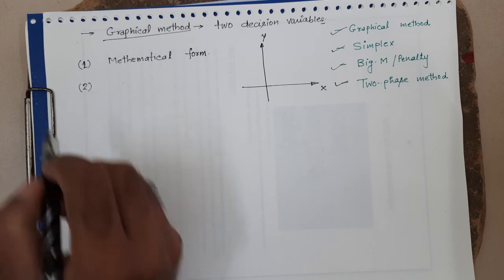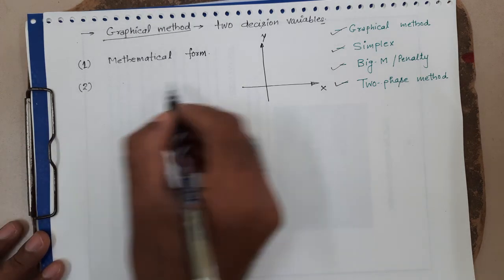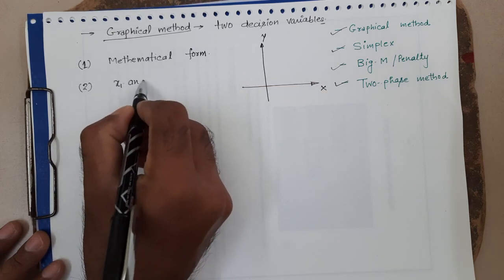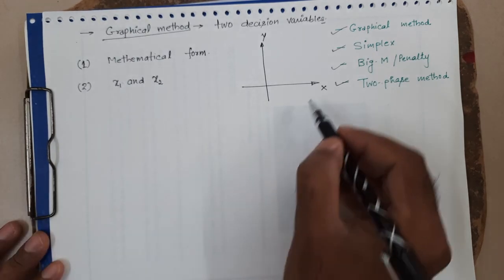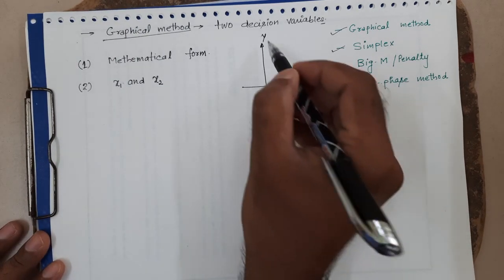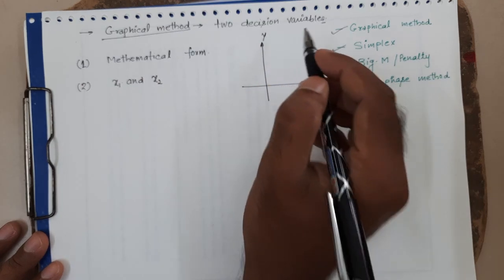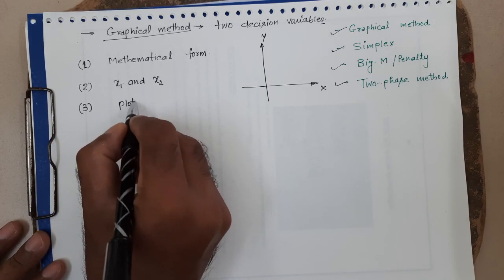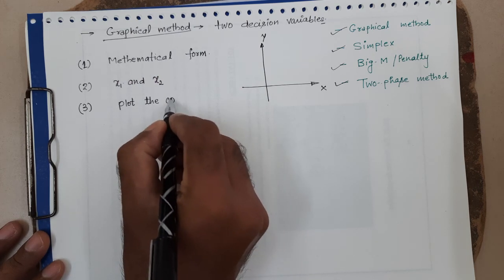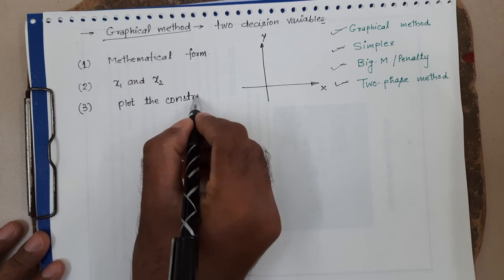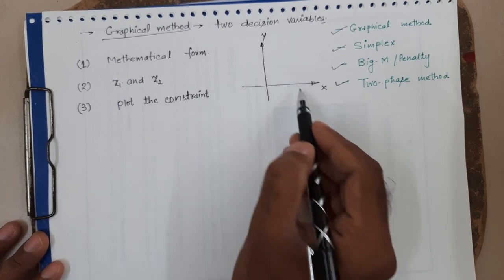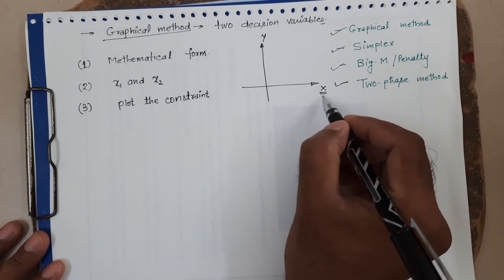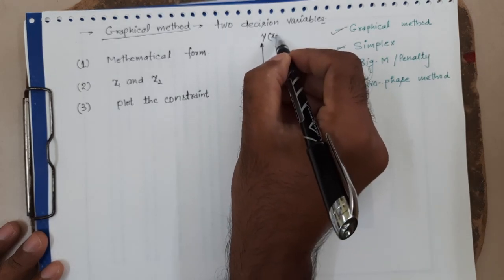We draw the axes, considering x1 and x2 as the axes. So x is replaced by x1 and y is replaced by x2. In the third step, we plot the constraints on this graph — whatever constraints are given in the problem, we draw them to scale, with x1 on the horizontal axis and x2 on the vertical axis.